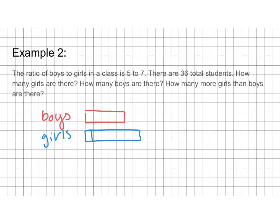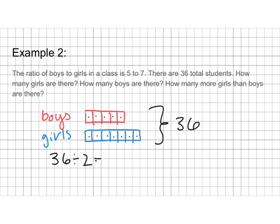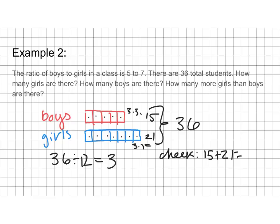I'm using the grid in my notebook. All together, counting the boxes, there are 12 total boxes — not 36. So I do 36 divided by 12 to figure out how much each box is worth. 36 divided by 12 equals 3, so each box is worth 3. Three times 5 gives me 15 boys, and 3 times 7 gives me 21 girls. I check my work: 15 plus 21 equals 36. ✓